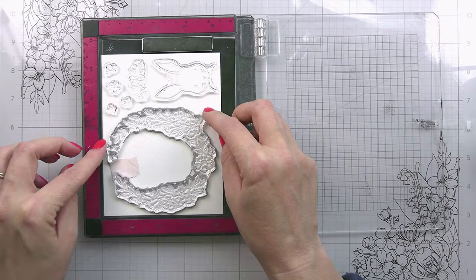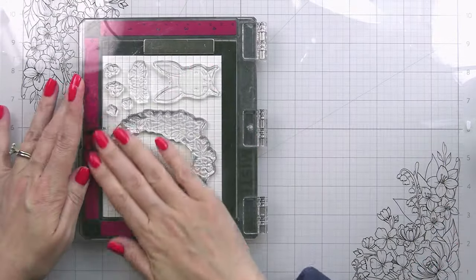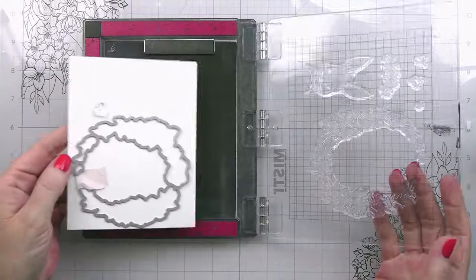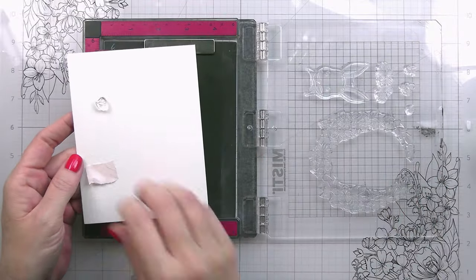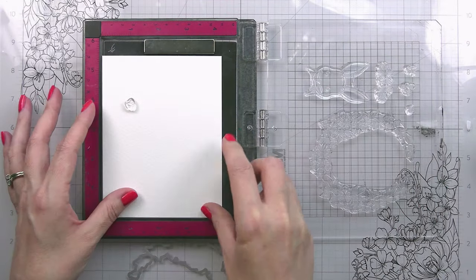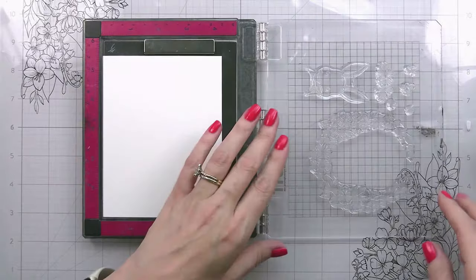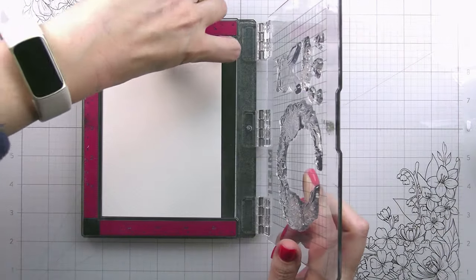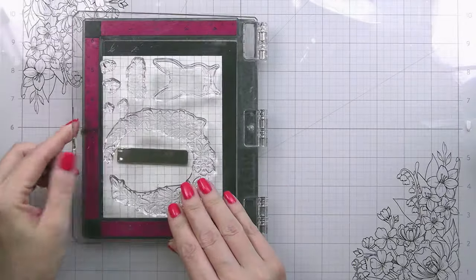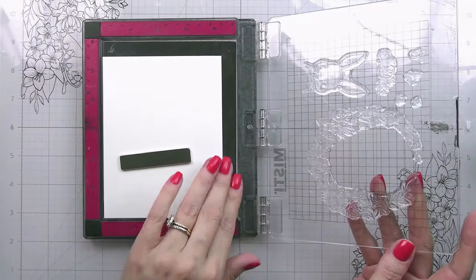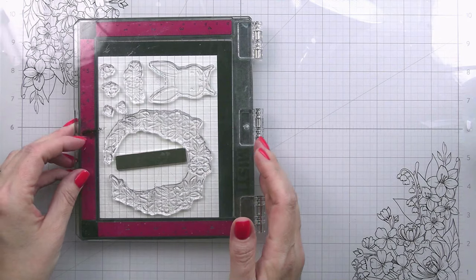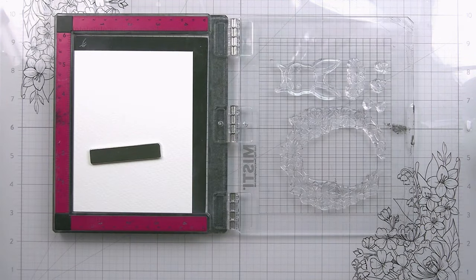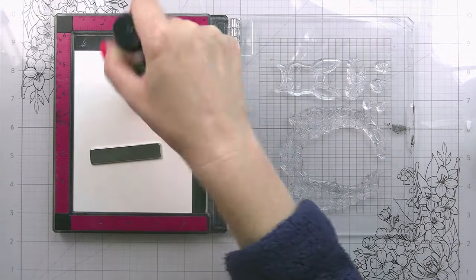So my little trick for that is I actually put the die down first, line my stamp up, and then I pick everything up with my Misti door. Everything except for that little bee. And then that way I know when I stamp it, it's going to stay exactly the way that it needs to for me to be able to die cut it. Now, if you're a person who's not using the dies, you won't have to worry about that.